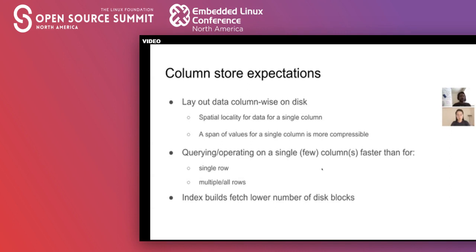Column stores in general handle OLAP style workloads, meaning you're projecting a few columns and selecting a lot of data out, much better than OLTP style workloads where you're doing updates and deletes or querying the entire row, or you just want one row out of the database with many transactions. That is a case that column store doesn't really handle well. But for OLAP style, it should do well. Because fetching a single or few columns takes much fewer disk pages, index builds and selects will also be faster.